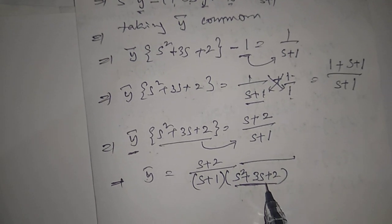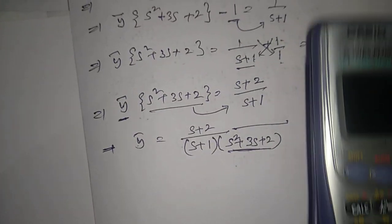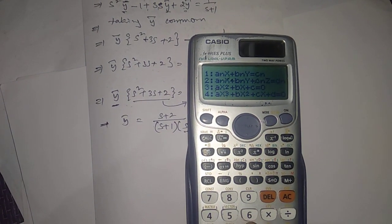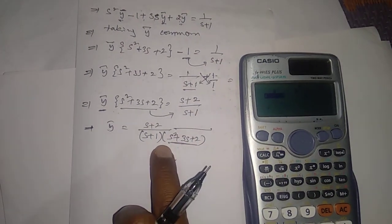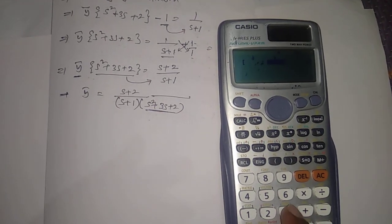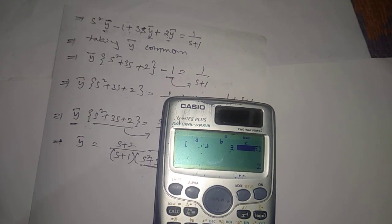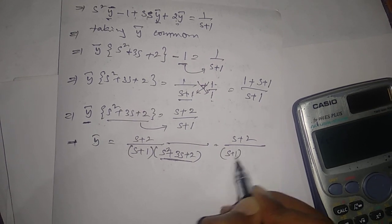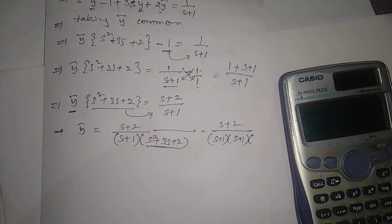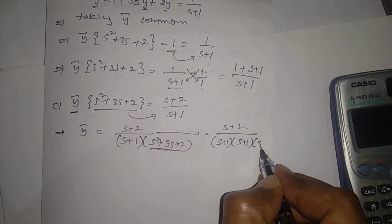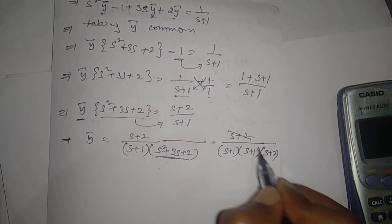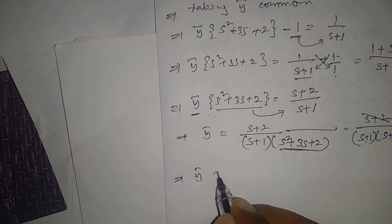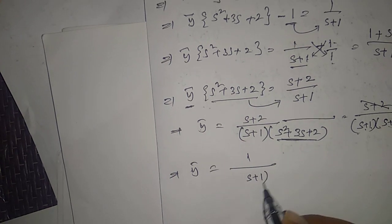So Ȳ = (s+2) / [(s+1)·(s² + 3s + 2)]. The quadratic s² + 3s + 2 factors as (s+1)·(s+2). Therefore Ȳ = (s+2) / [(s+1)·(s+1)·(s+2)]. The (s+2) terms cancel, giving Ȳ = 1/(s+1)².